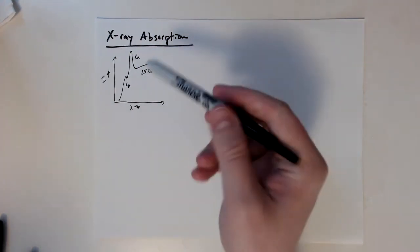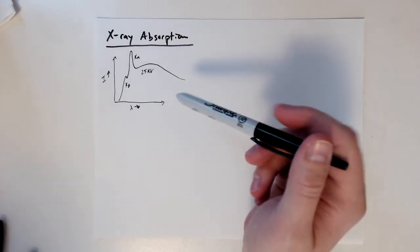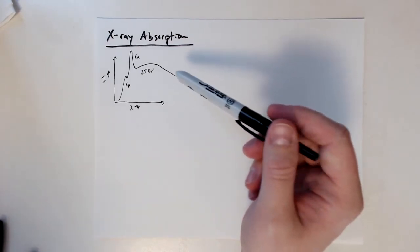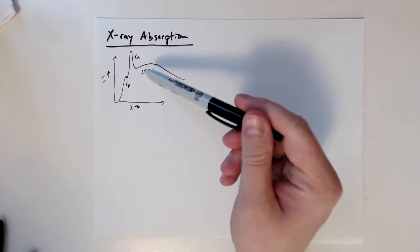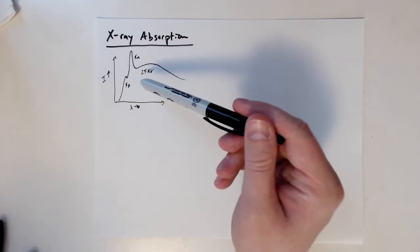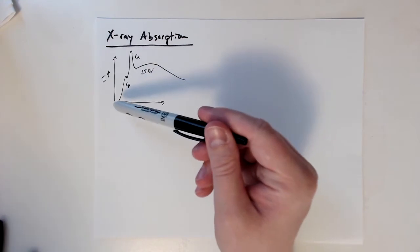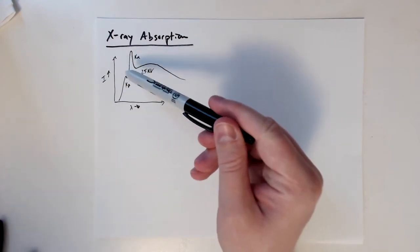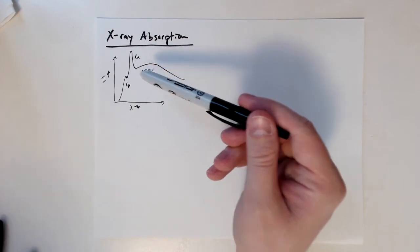For this video we're going to talk about x-ray absorption. If you recall the figure I drew earlier with the characteristic x-rays that are formed, I mentioned these are used for monochromatic wavelengths. We want one wavelength, but what often happens is that you get multiple wavelengths.